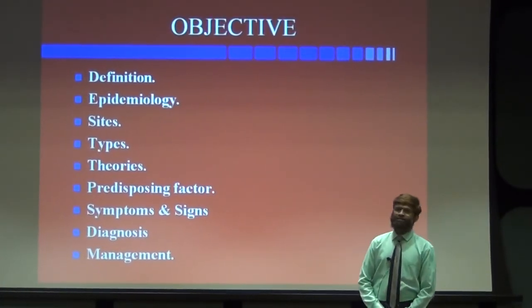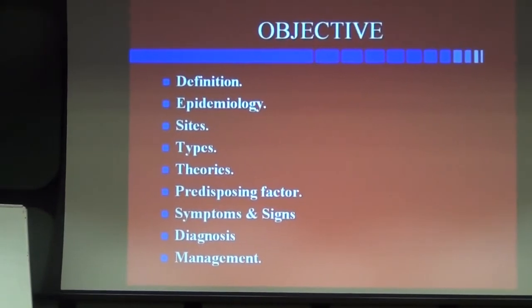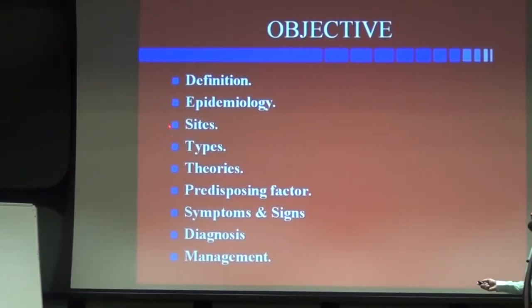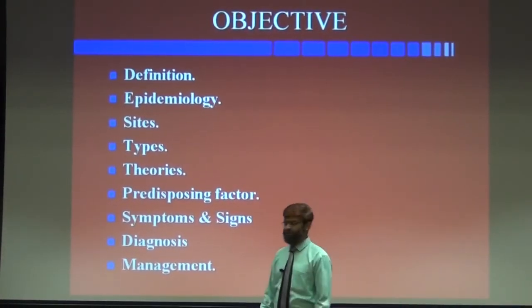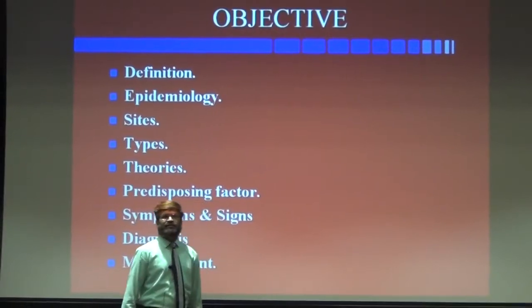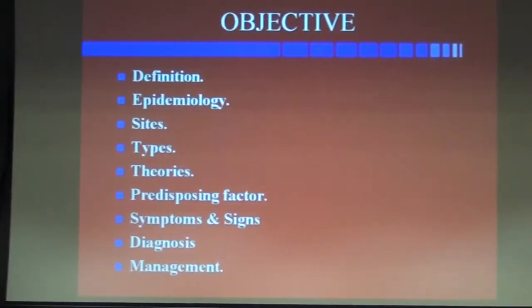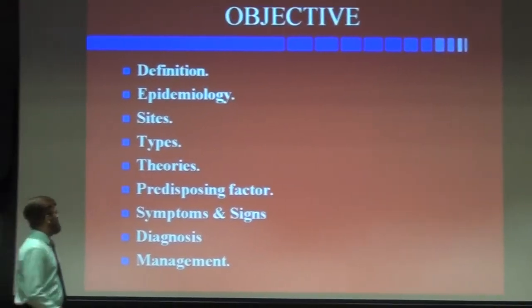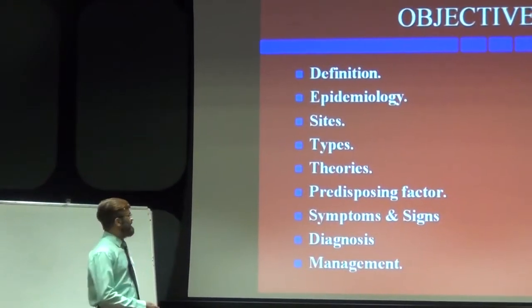At the end of the class, we will be able to understand the definition of endometriosis, the epidemiology, the sites where endometriosis can occur, and the types of endometriosis. Because the exact cause of endometriosis is not known, there are a few hypotheses and theories. We will also talk about predisposing factors, symptoms and signs, diagnosis, and management for endometriosis.